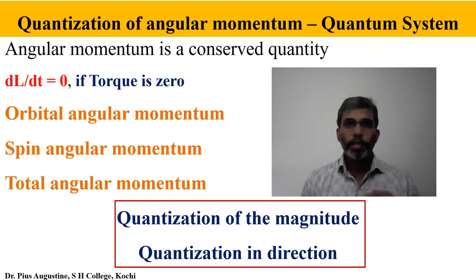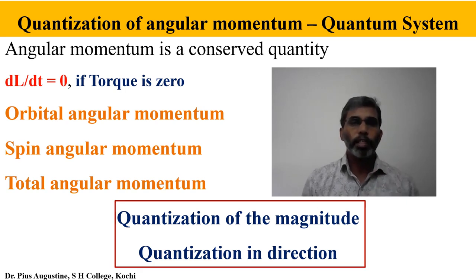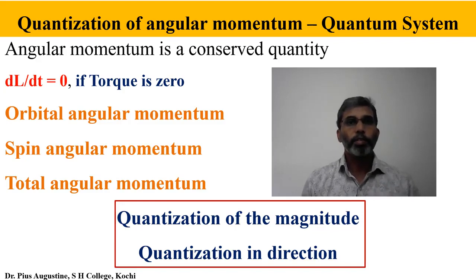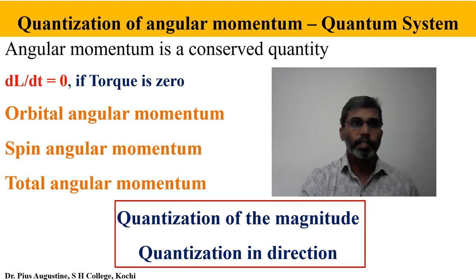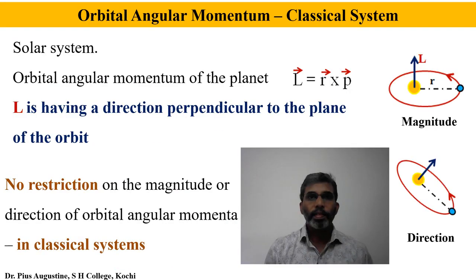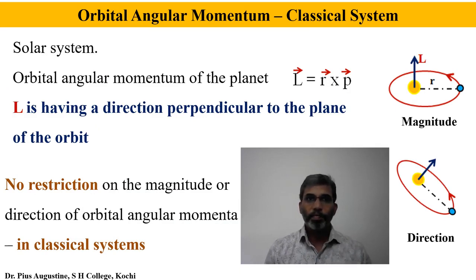We will try to understand orbital angular momentum, spin angular momentum, and total angular momentum, as well as the quantization of the magnitude and direction of these angular momenta. We will start with a classical system — the best example being the solar system.